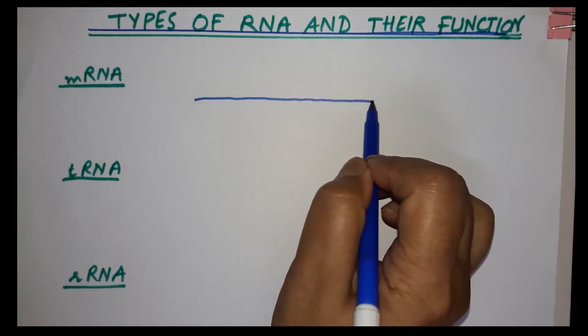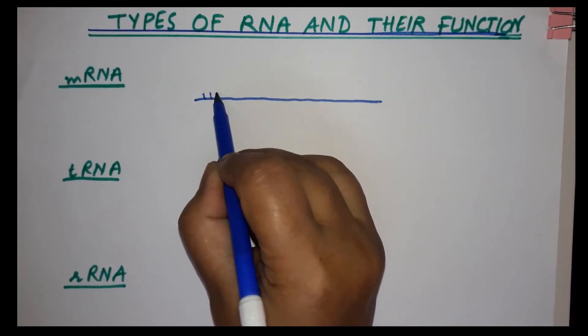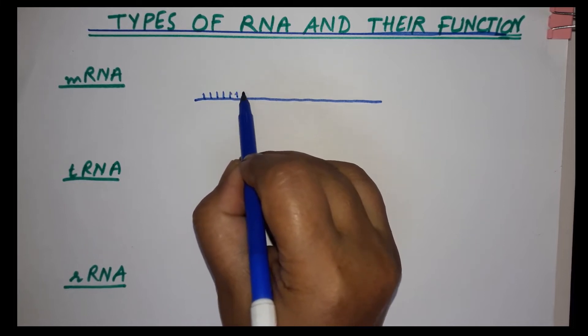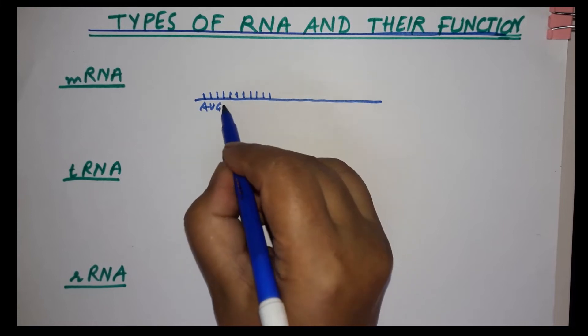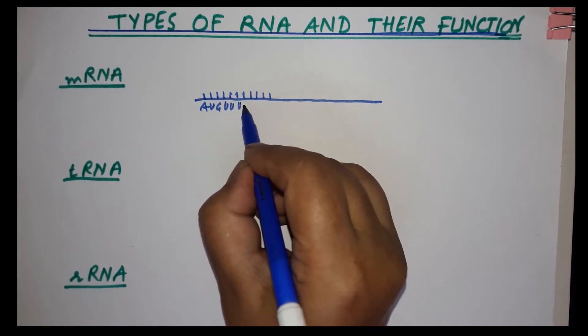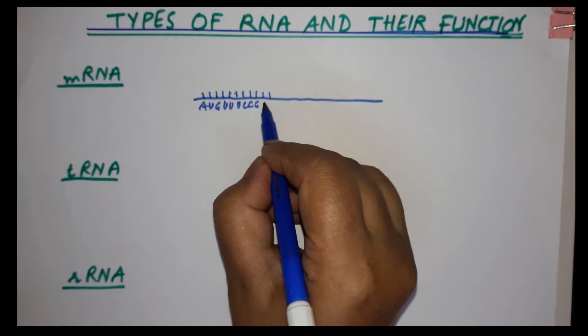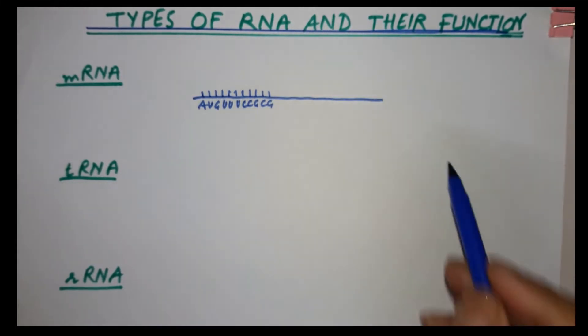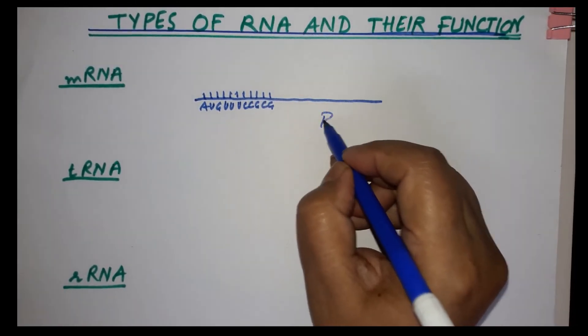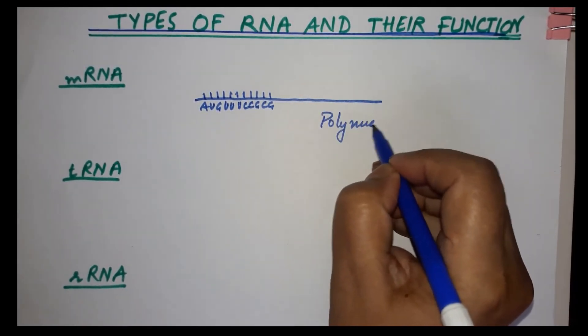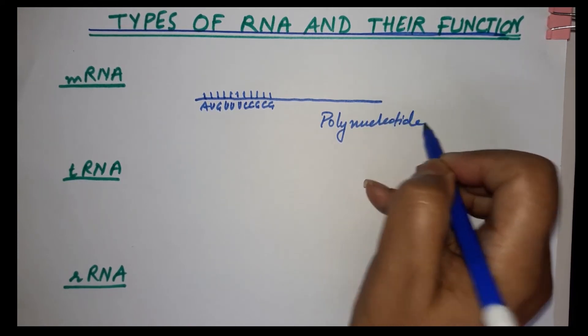Messenger RNA carries the information from DNA to ribosomes outside the nucleus, and it has the triplet code information. This is the single strand of nucleotides. It is a polynucleotide; the difference is...